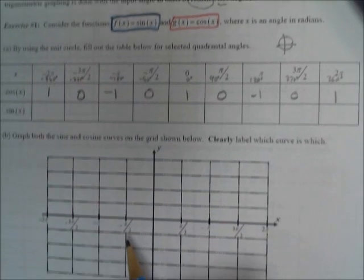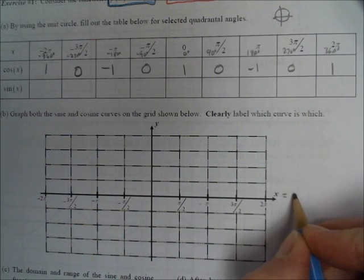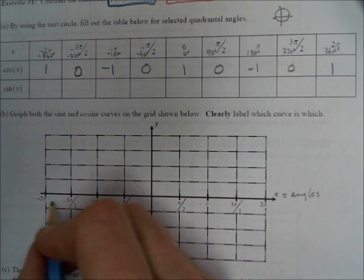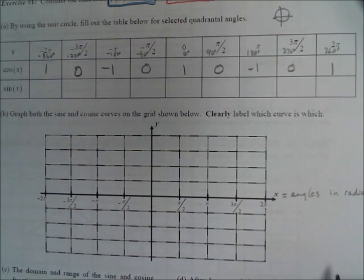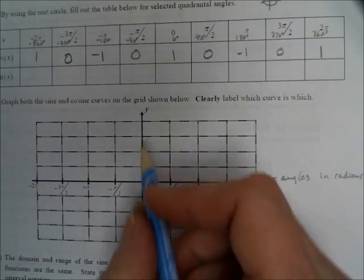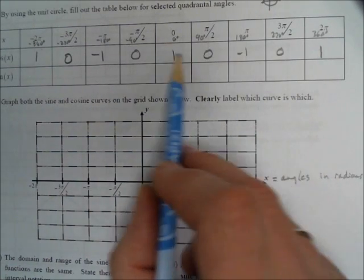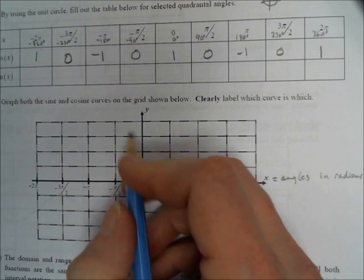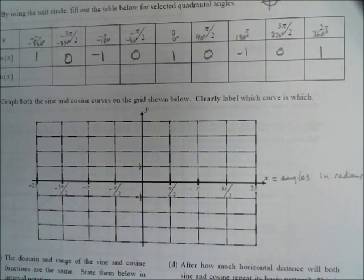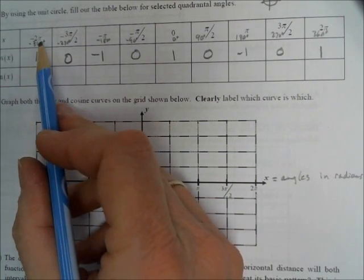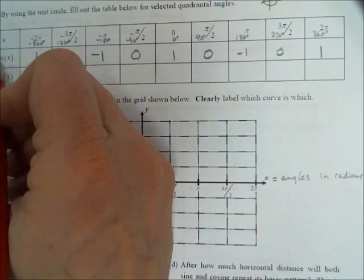Now that we have x and y values, we're going to plot those as points on the graph. The x values are the angles in radians — you can see the x grid is already marked in radians. The y value ranges from a maximum of 1 to a minimum of negative 1. We'll do g of x, the cosine curve, in red.